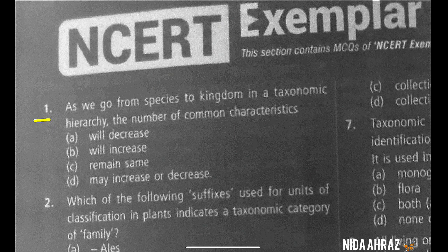As we go from species to kingdom in a taxonomic hierarchy, the number of common characteristics will decrease, increase, remain the same, or may increase or decrease. The correct choice is option A: will decrease.